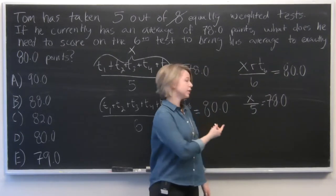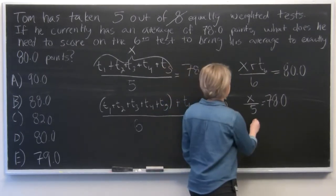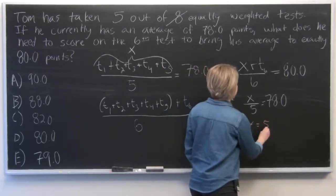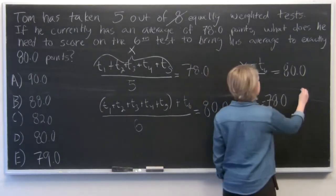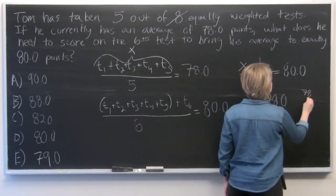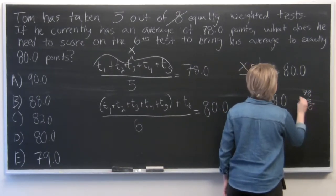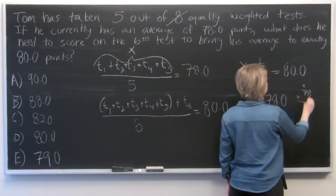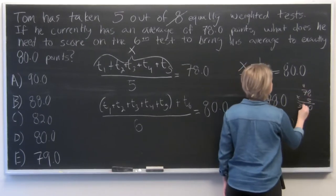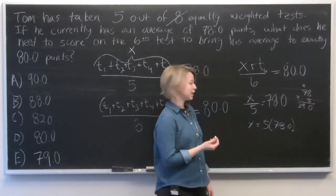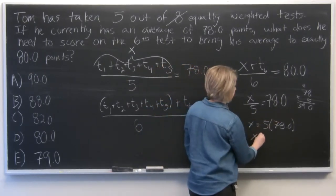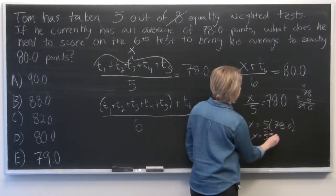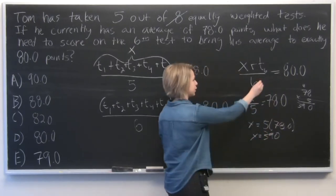And we'll solve for x in this equation. So x equals 5 times 78.0. So we've got 390 points to work with here. And now we'll substitute in x equals 390 into this equation.